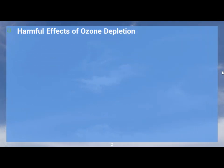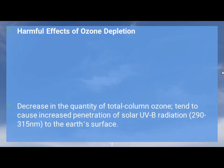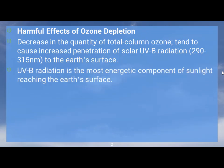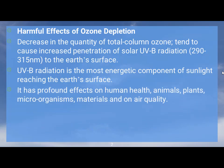A decrease in the quantity of total column ozone tends to cause increased penetration of solar UVB radiation to the Earth's surface. UVB radiation is the most energetic component of sunlight reaching the Earth's surface, and it has profound effects on human health, animals, plants, microorganisms, materials, and on air quality.